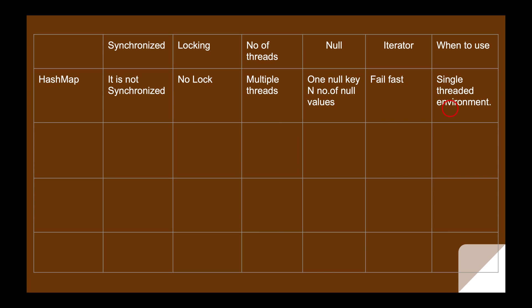If you want to use HashMap in a multi-threaded environment, you must write your code in a synchronized block or use an external lock implementation. But while dealing with synchronized blocks or external lock implementations, you should take proper care of deadlock situations and errors. It's not advisable to use HashMap in a multi-threaded environment; we have different concurrent collection classes we can use instead.